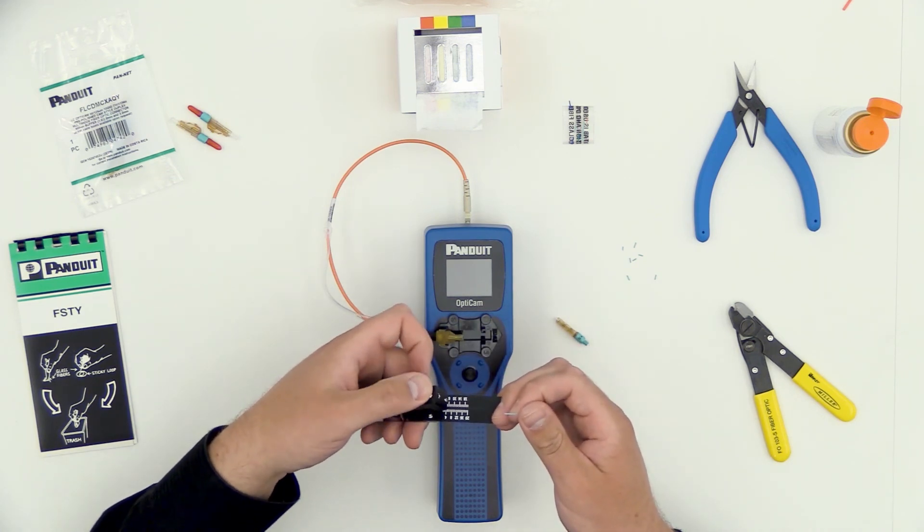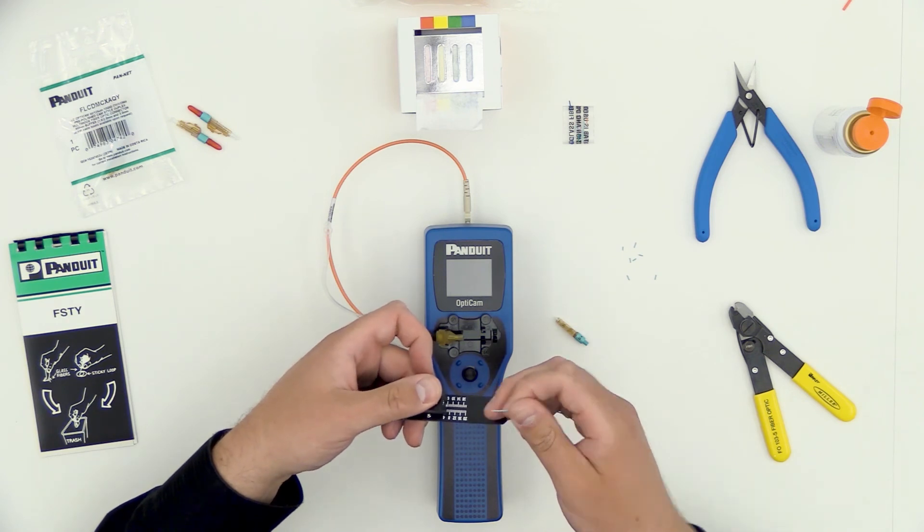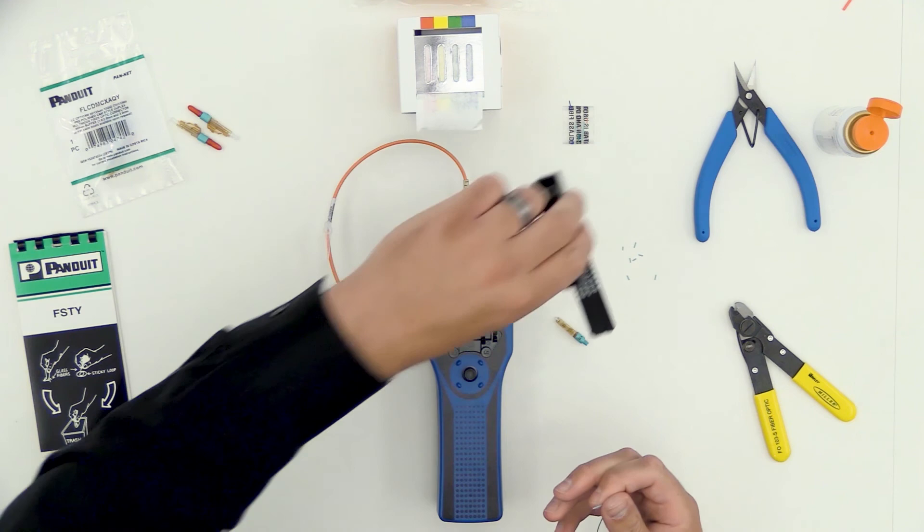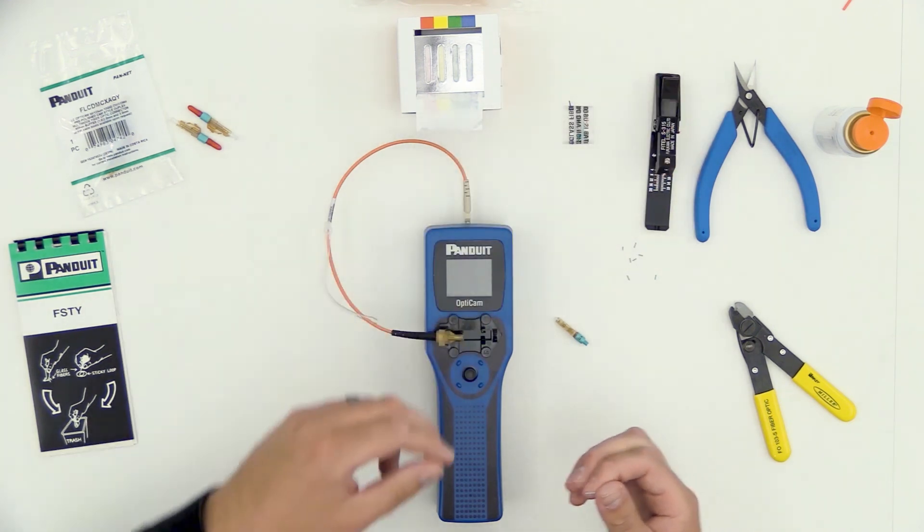Please make sure you don't slam this down, don't repeatedly touch the fiber or hold it down while you bend the leaf spring. Any of these will cause a bad end face which will of course result in bad terminations.